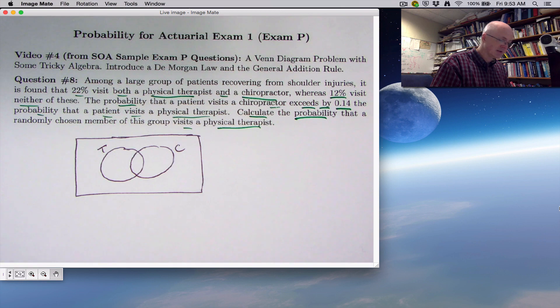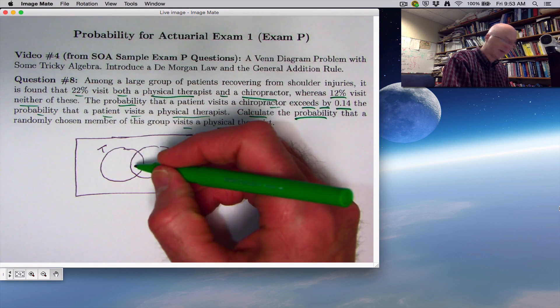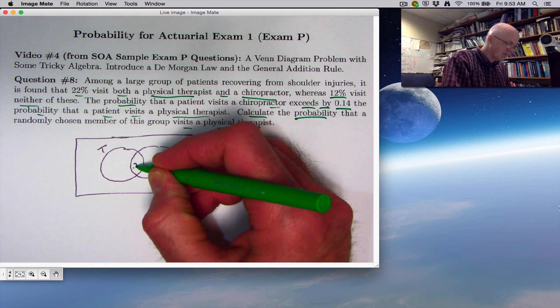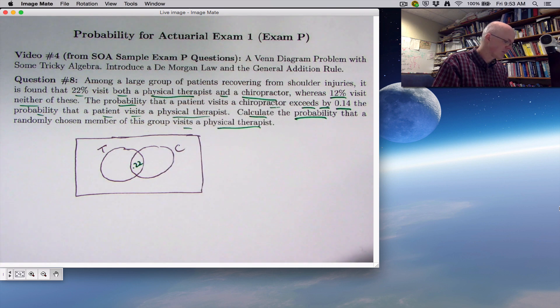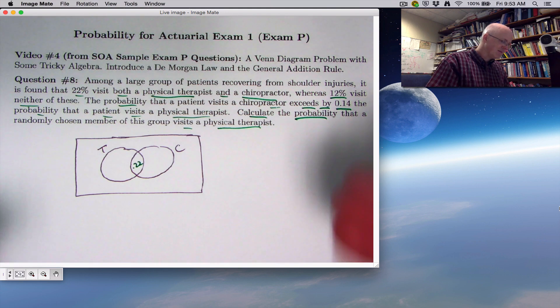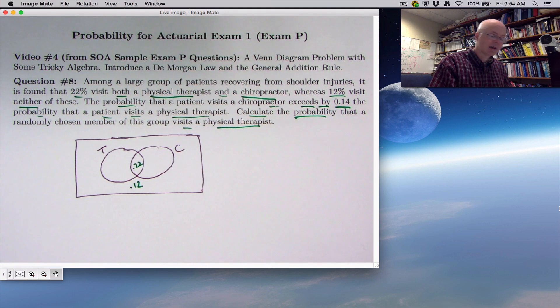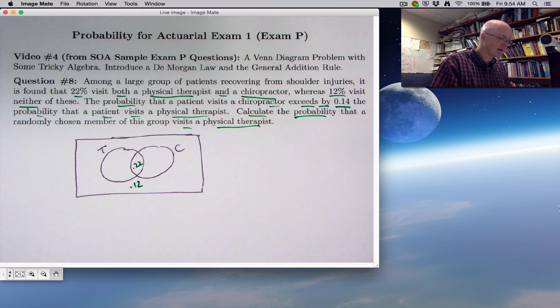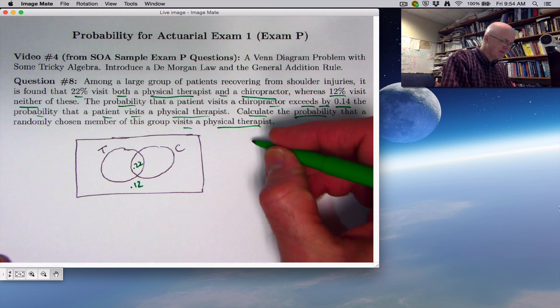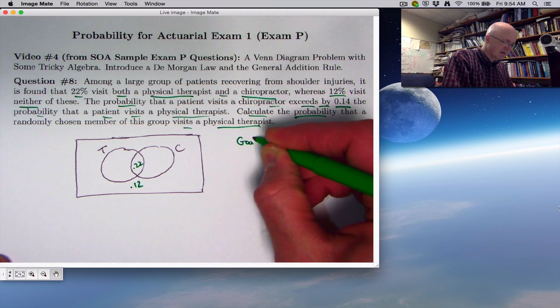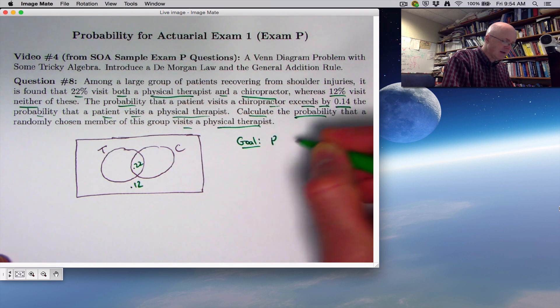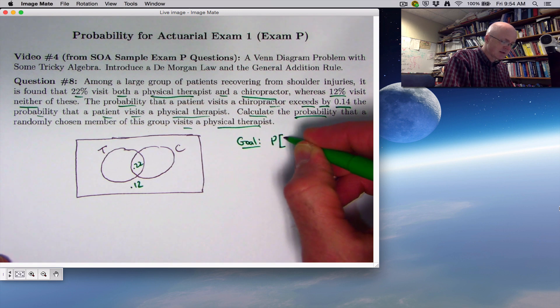Write down the given information. 22% visit both, so label the intersection with 0.22. Whereas 12% visit neither - 12% represents the people who are outside of both circles. They are not visiting a physical therapist and they are also not visiting a chiropractor.